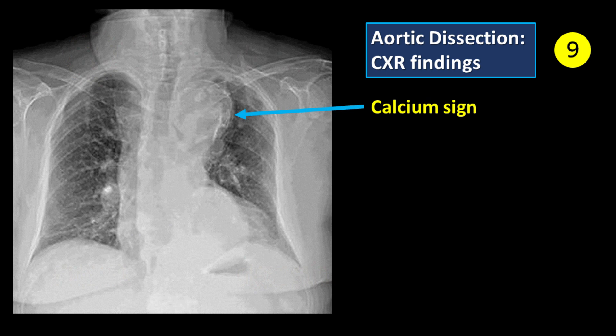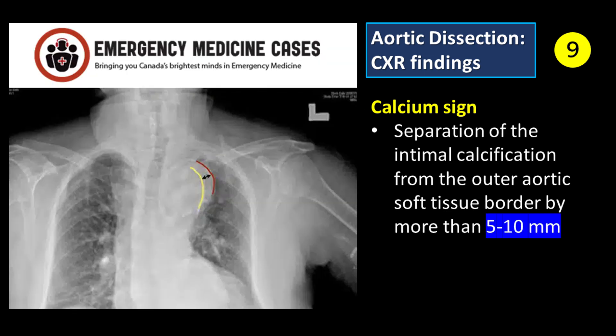Feature number 9: Calcium sign. Calcium sign refers to separation of the intimal calcification from the outer aortic soft tissue border by more than 5 to 10 millimeters.